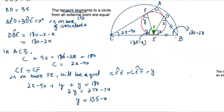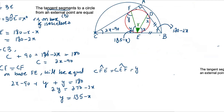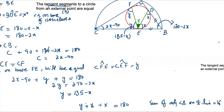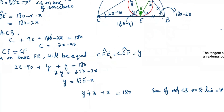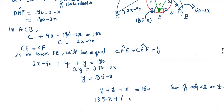Now, angle CEF is y degrees and angle gamma, plus angle x, lie on a straight line. The sum of adjacent angles on a straight line equals 180. So: y plus gamma plus x equals 180, which gives (135 minus x) plus gamma plus x equals 180. The x cancels, therefore gamma equals 180 minus 135, which equals 45 degrees. This is the answer.